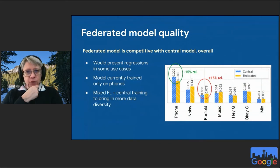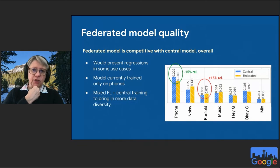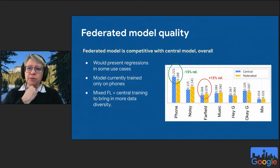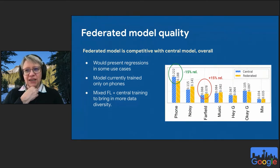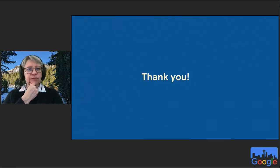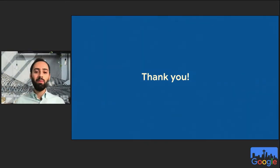Current results show that on average, federated training achieves quality comparable to central training, which is already a very good result. However, across different datasets, performance is sometimes slightly worse and sometimes slightly better. We cannot deploy this yet because there must be no regressions anywhere. We continue optimizing, and mixing the two training approaches should improve results further.